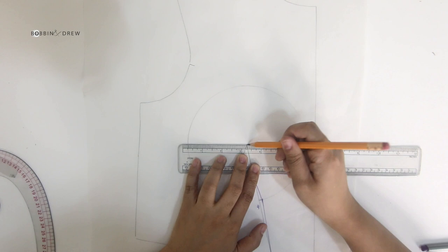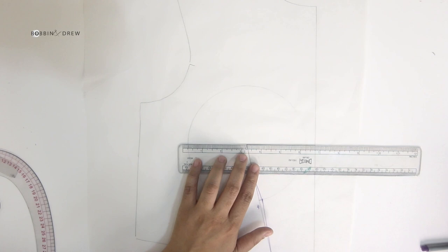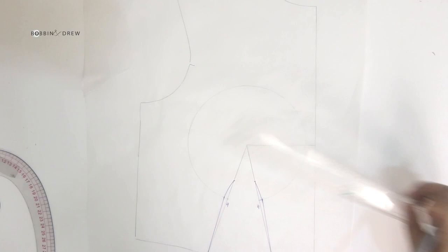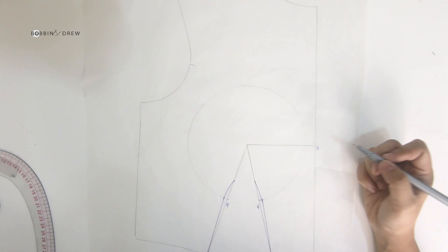Next is contour guide number five, and this is to remove any excess between the bust. Again, we need to address the when and how questions. So for the when: when do we use this? We use this guideline if our design calls to reveal the cleavage.